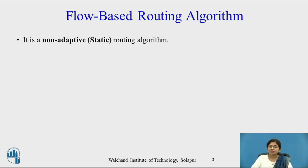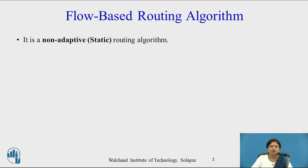So let's start with the flow-based routing algorithm. It is a non-adaptive routing algorithm, which is also known as a static algorithm. In this algorithm, the router sets the path and these paths are not changed — that means the paths are fixed from source to destination.